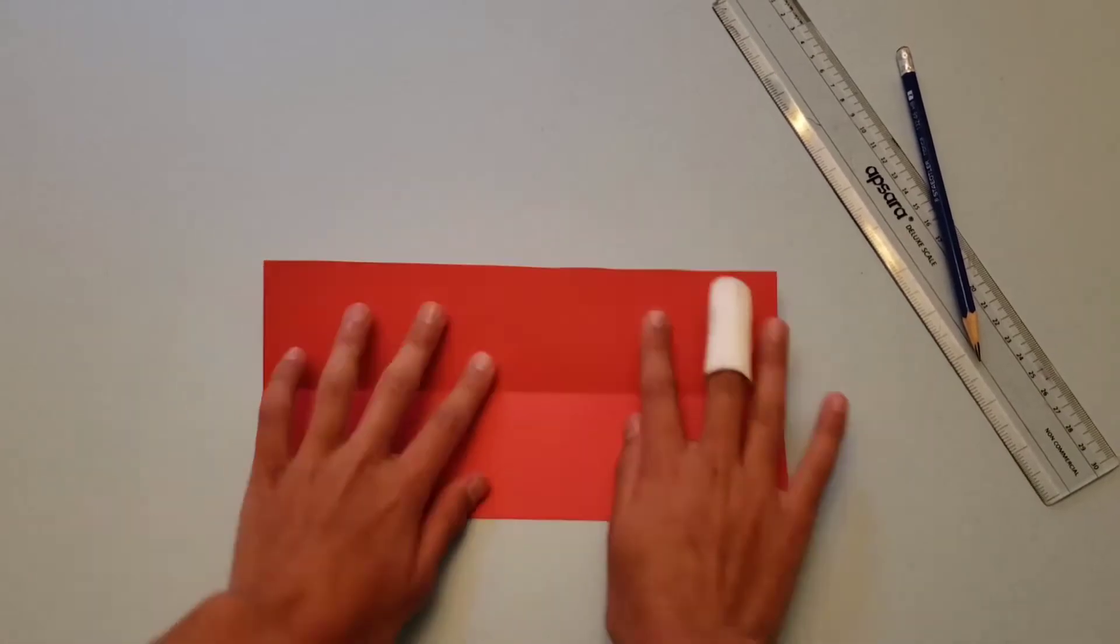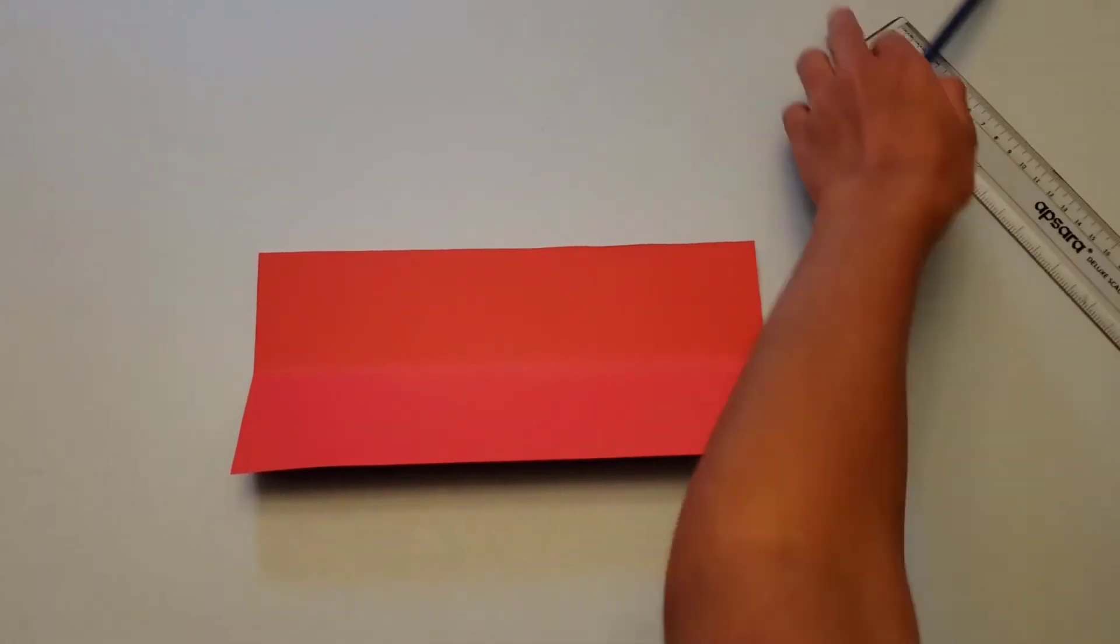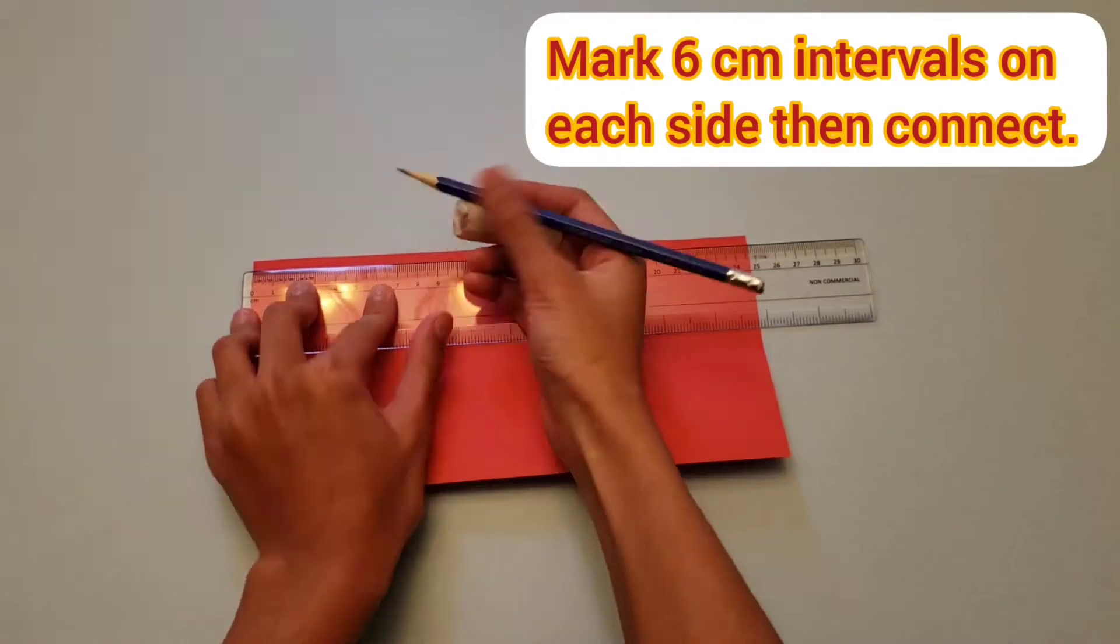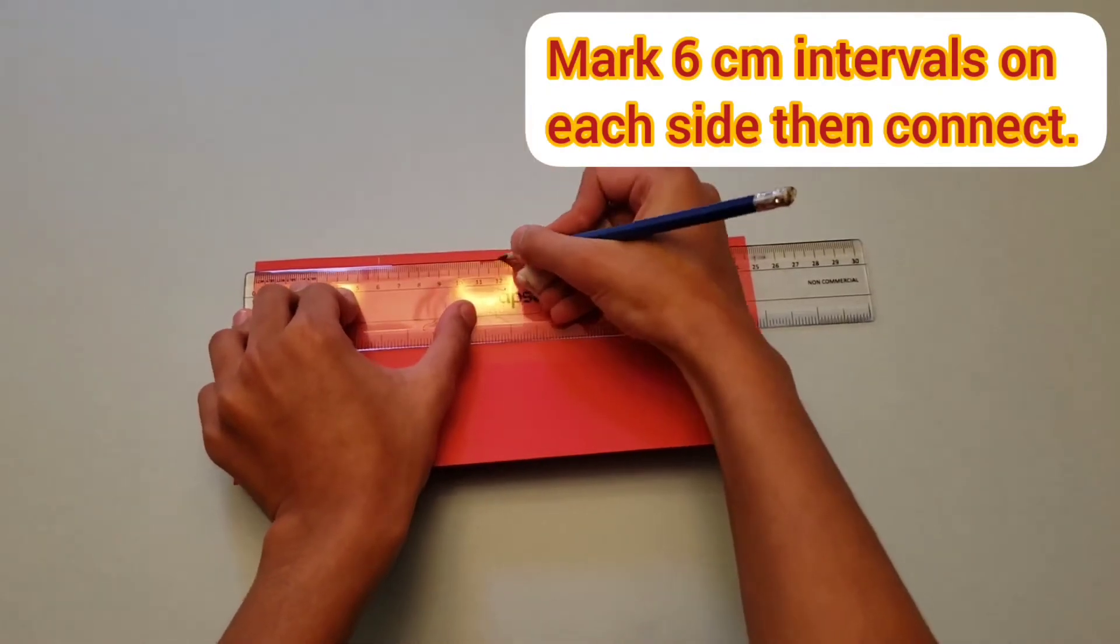Fold the paper in half, and once you open it, make 6 centimeters intervals on both sides, on the longer side.